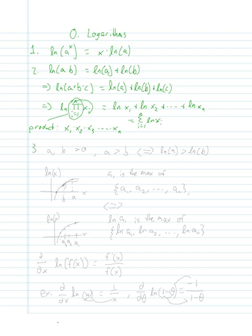Now, another really important property for our case is that if you have a and b both greater than 0, a being greater than b is equivalent to natural log of a being greater than natural log of b. I think this is best explained graphically.